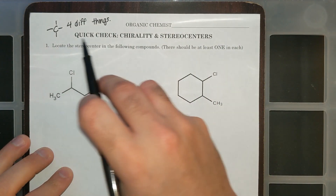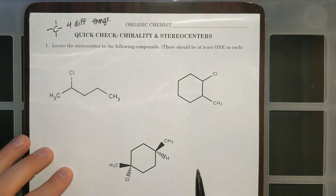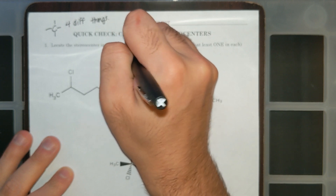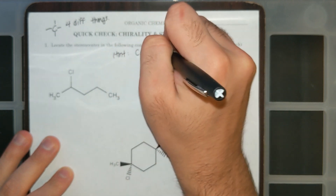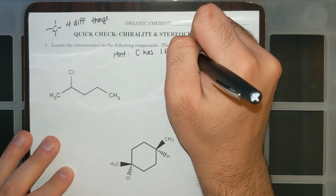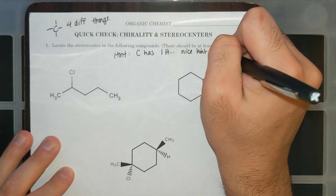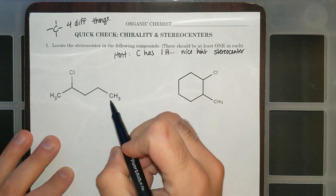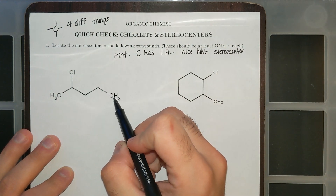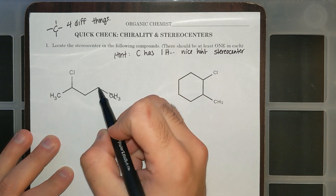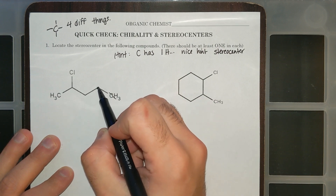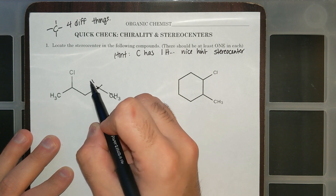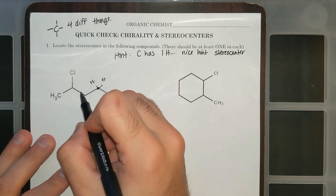So I'm going to look at this first example and look for carbons. A nice little hint is if a carbon has one hydrogen, that's a hint for a stereocenter with four different groups. If I look at CH3, this carbon has three hydrogens — that's three of the same group, not a stereocenter. If I look at this carbon, it has two hydrogens, not a stereocenter. Same thing for this carbon — two hydrogens, not a stereocenter.